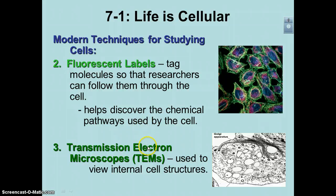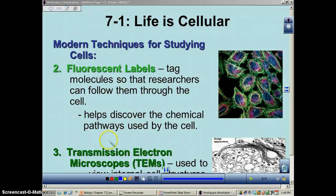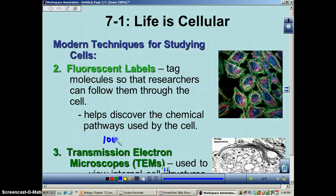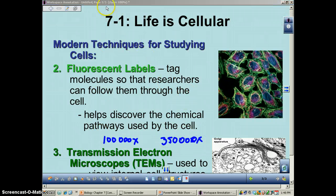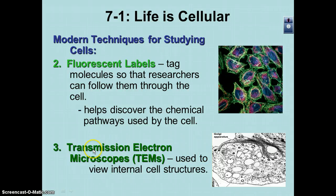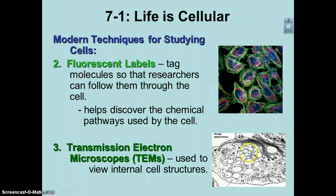Electron microscopes do not use light. Therefore their limit of resolution is much higher — in fact, the limit of resolution on electron microscopes can be well over 100,000 times, probably approaching a million. It wouldn't be uncommon to see a total magnification of around 30,000 times using an electron microscope. This one is called a transmission electron microscope. The electron beam goes all the way straight through the object, giving you really nice two-dimensional features. These are great for looking at internal cell structures.